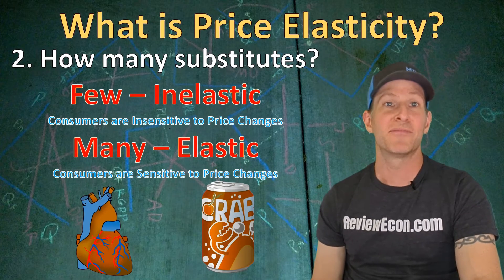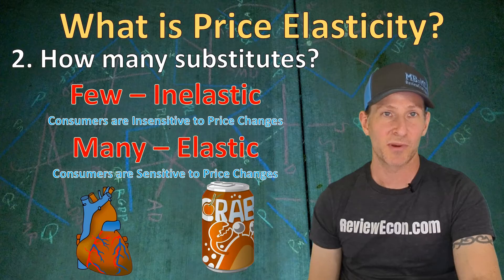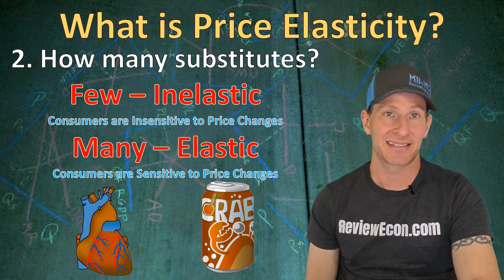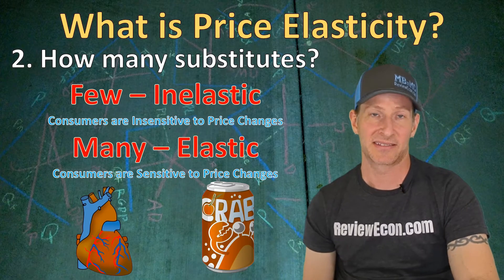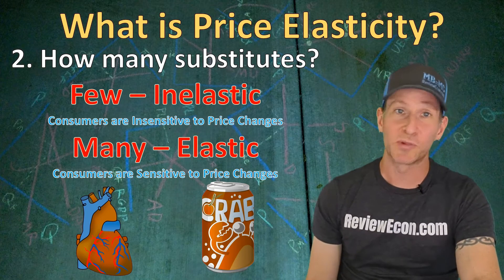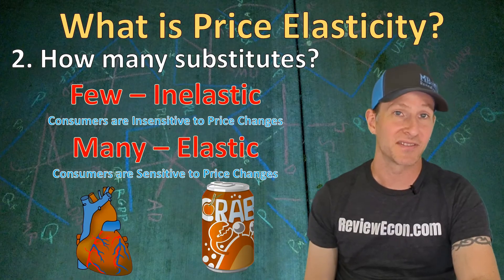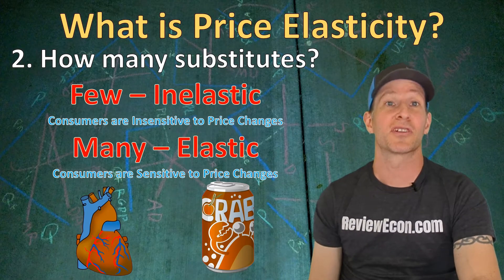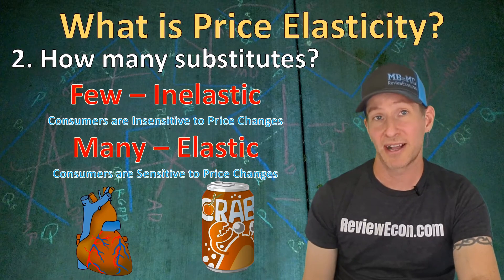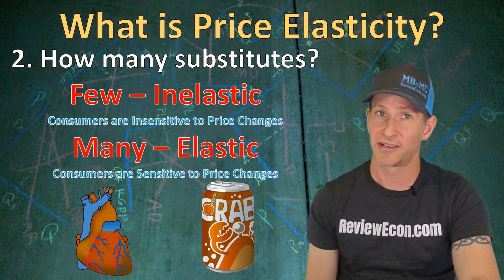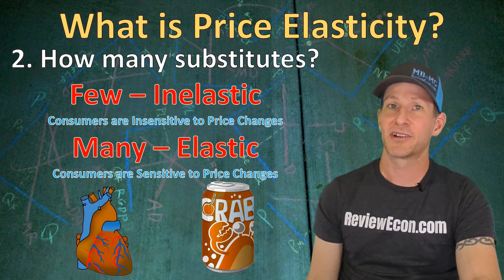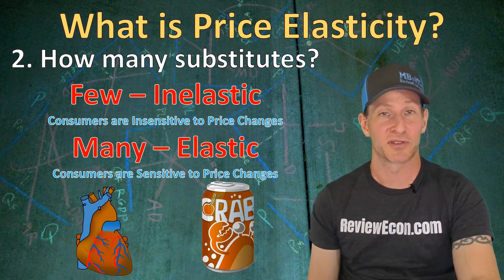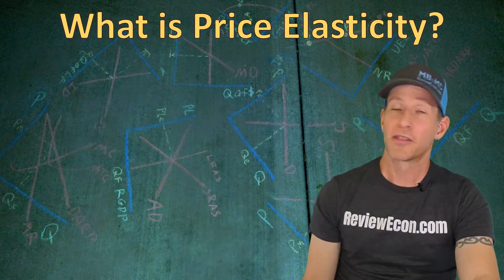On the other hand, if we have many substitutes for a product, then that product will have an elastic price elasticity of demand. A particular brand of cola will have lots and lots of substitutes, and as a result, consumers are sensitive to a price change of cola. When prices decrease, consumers buy a lot more, and when prices increase, consumers buy a lot less.